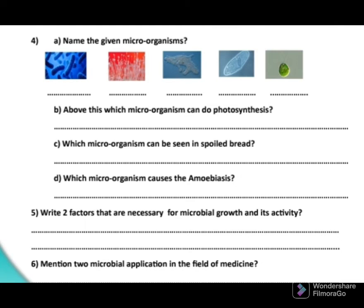Let's go to part C: which microorganism can be seen on spoiled bread? We can observe a white colored fluffy area on bread after spoilage. The reason for this appearance is the effect of fungi. Mucor, a type of fungi, will grow on the spoiled area of bread. Therefore, the suitable answer for part C is Mucor.